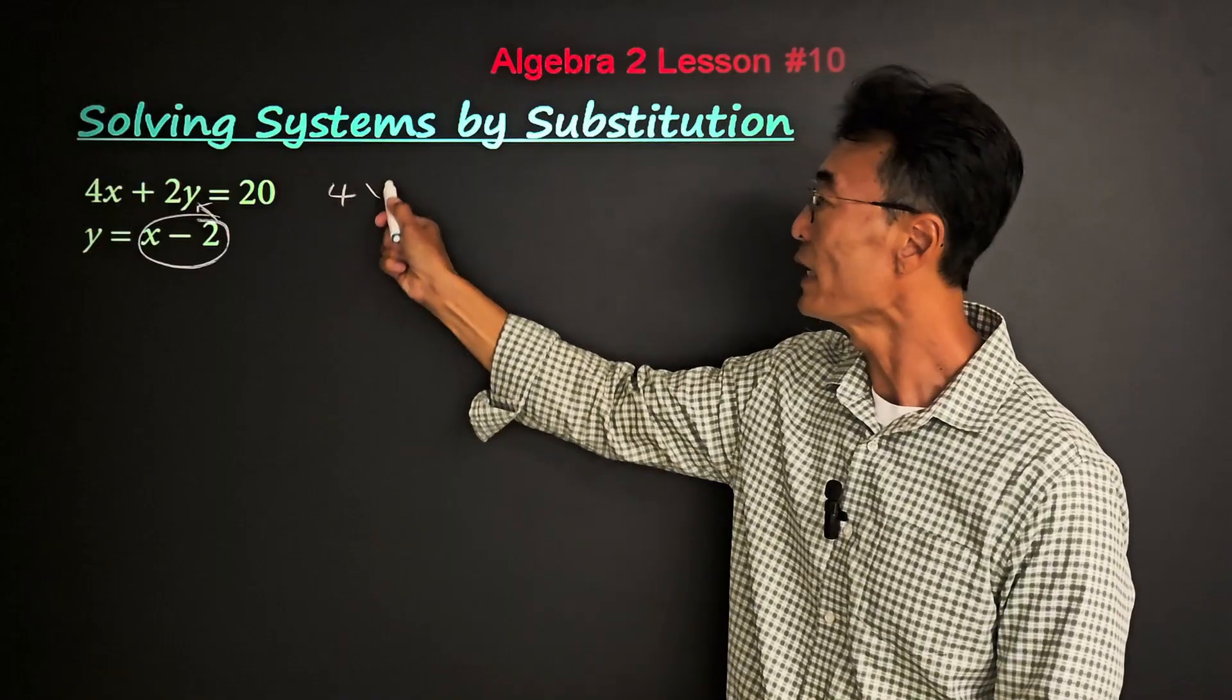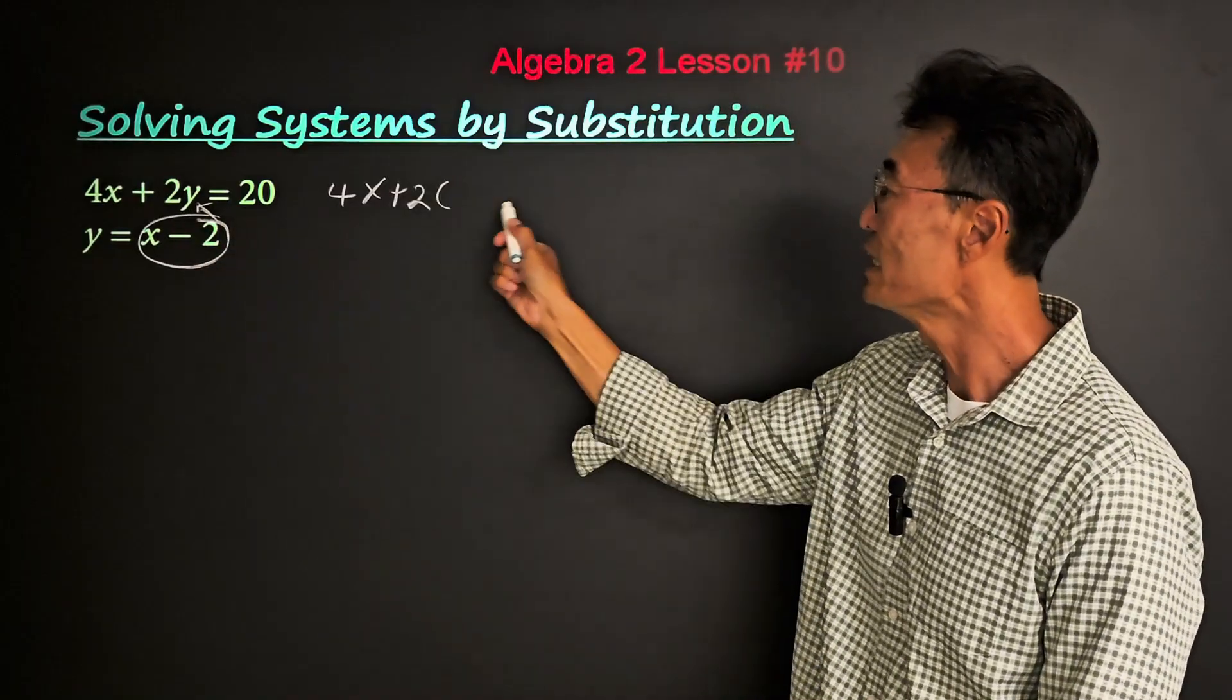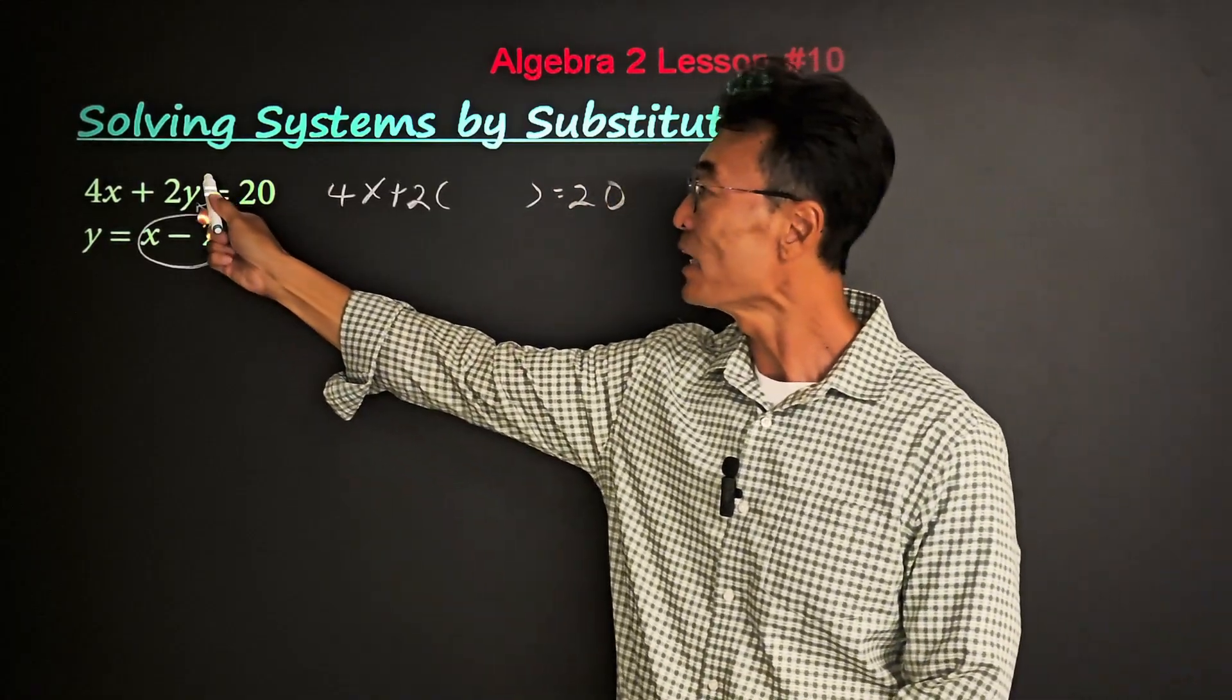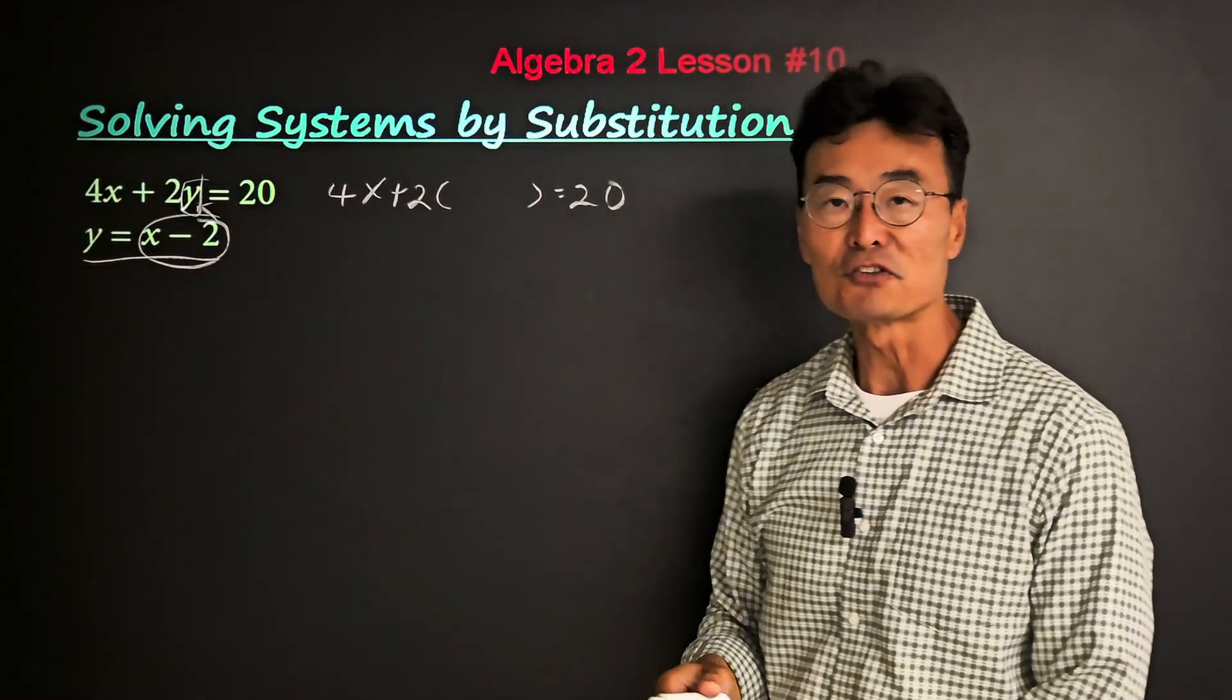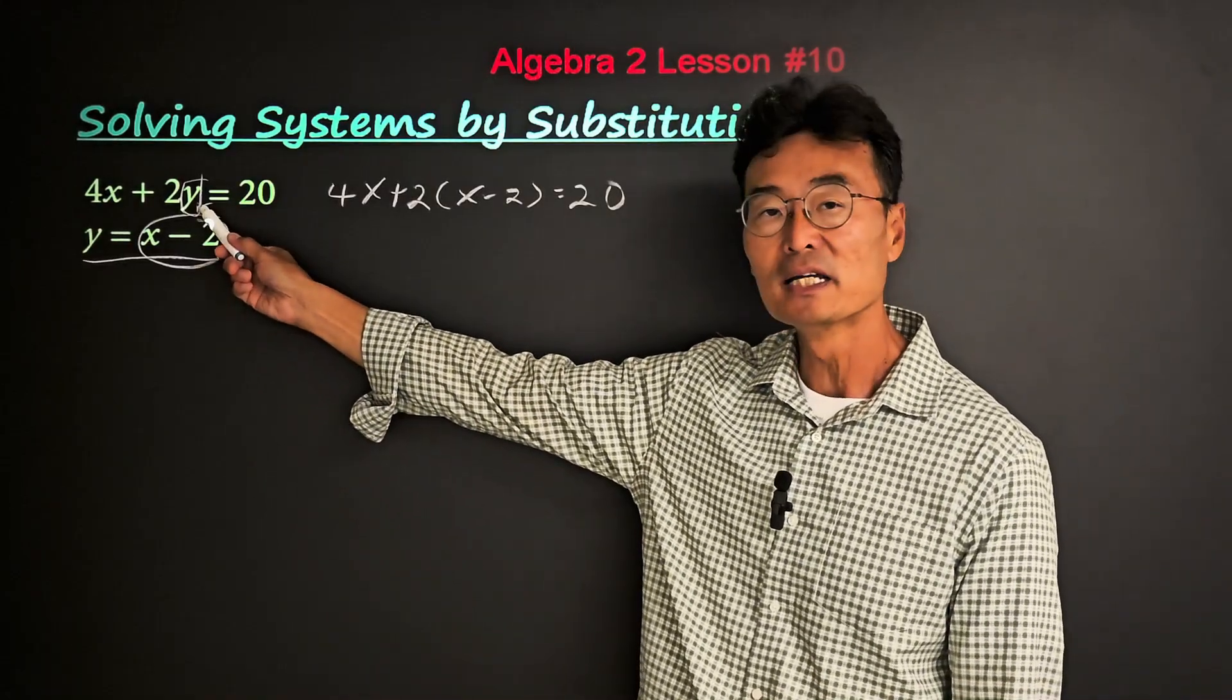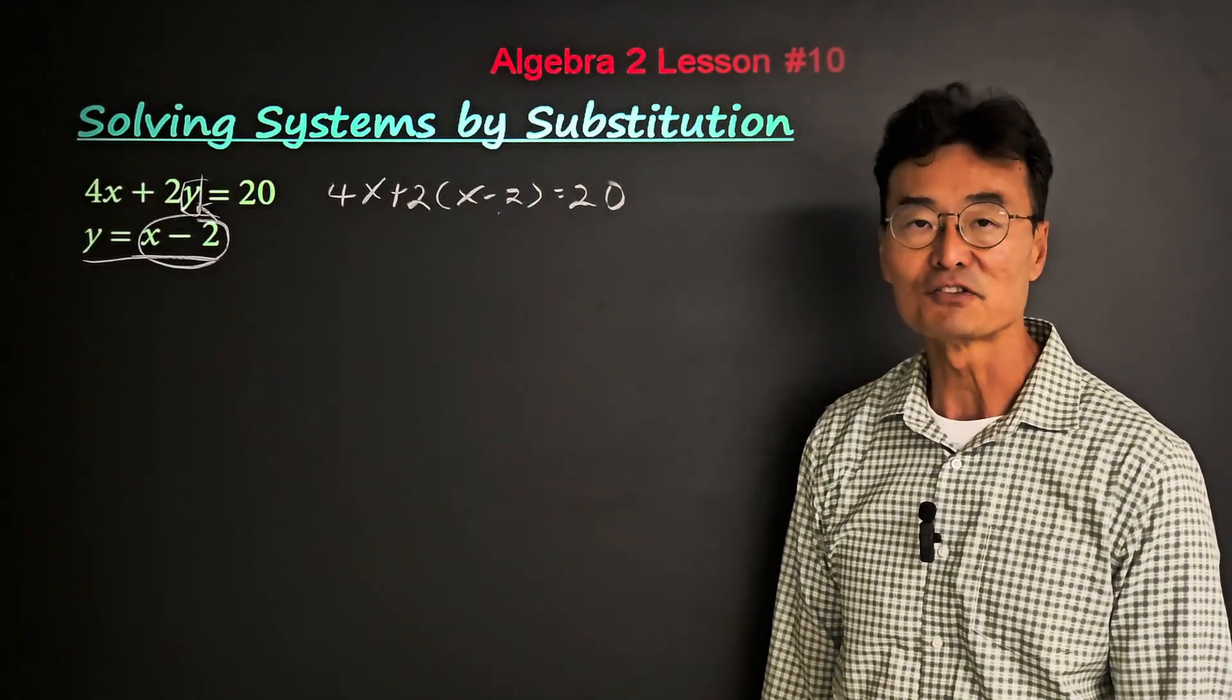So we end up getting 4x plus 2, and where we're substituting or replacing, I like to just put in a set of parentheses and write the equation. Whatever that value or the variable was, since it equals x minus 2, that's what I'm going to put in the parentheses. So all I did was I took out the y and replaced it with x minus 2, since y equals x minus 2.